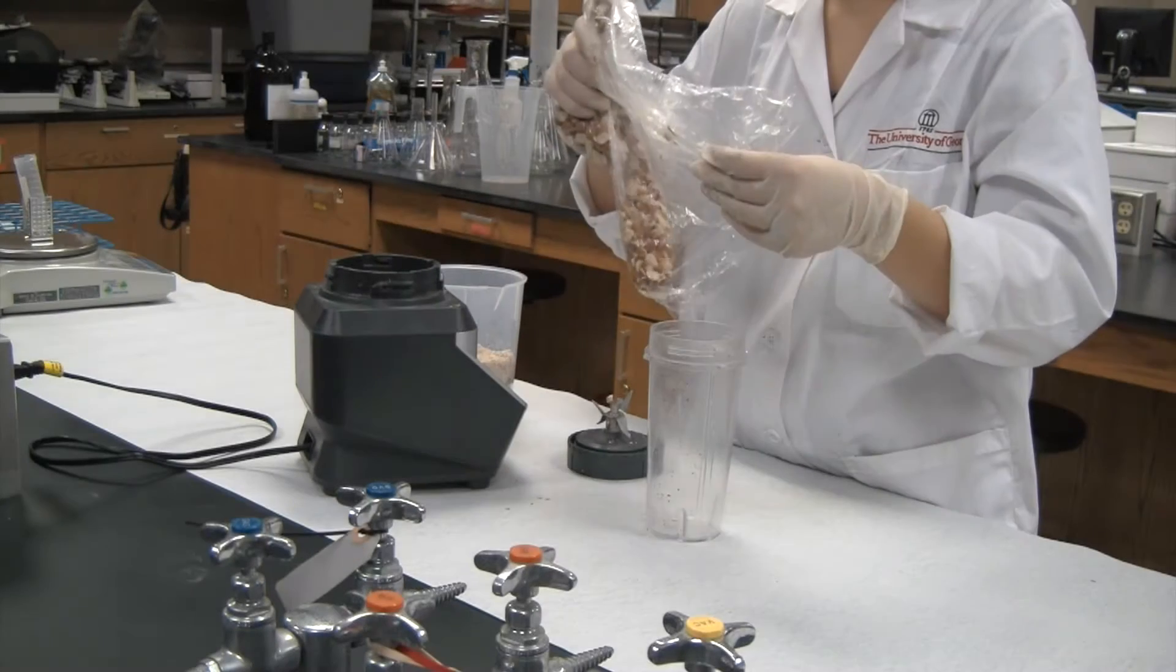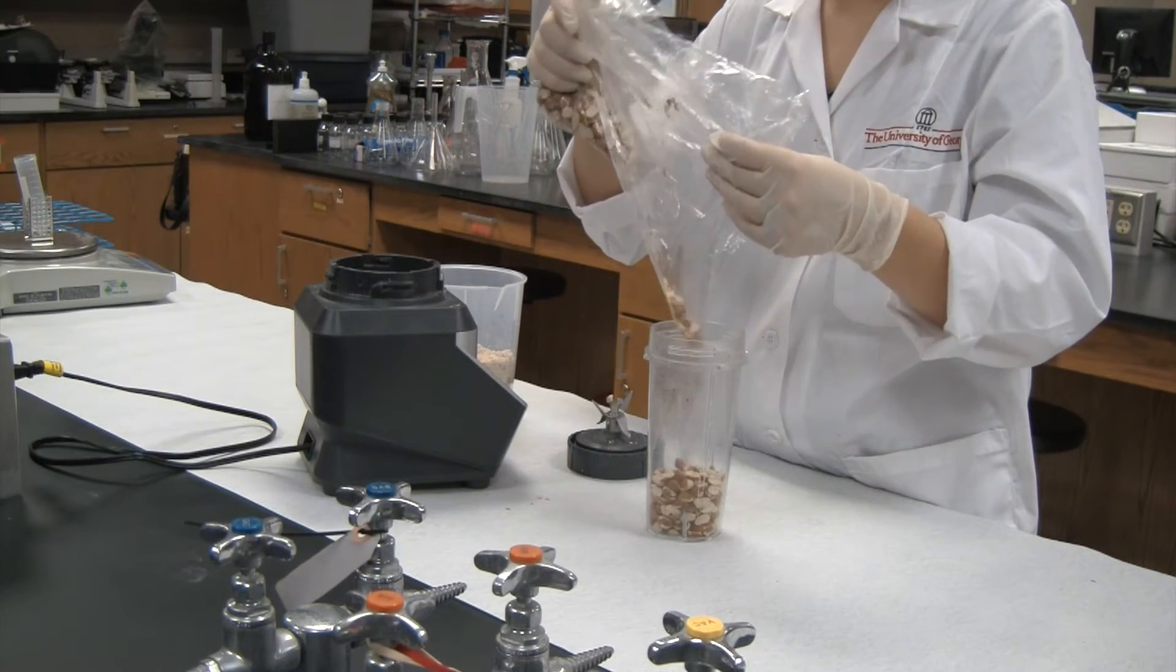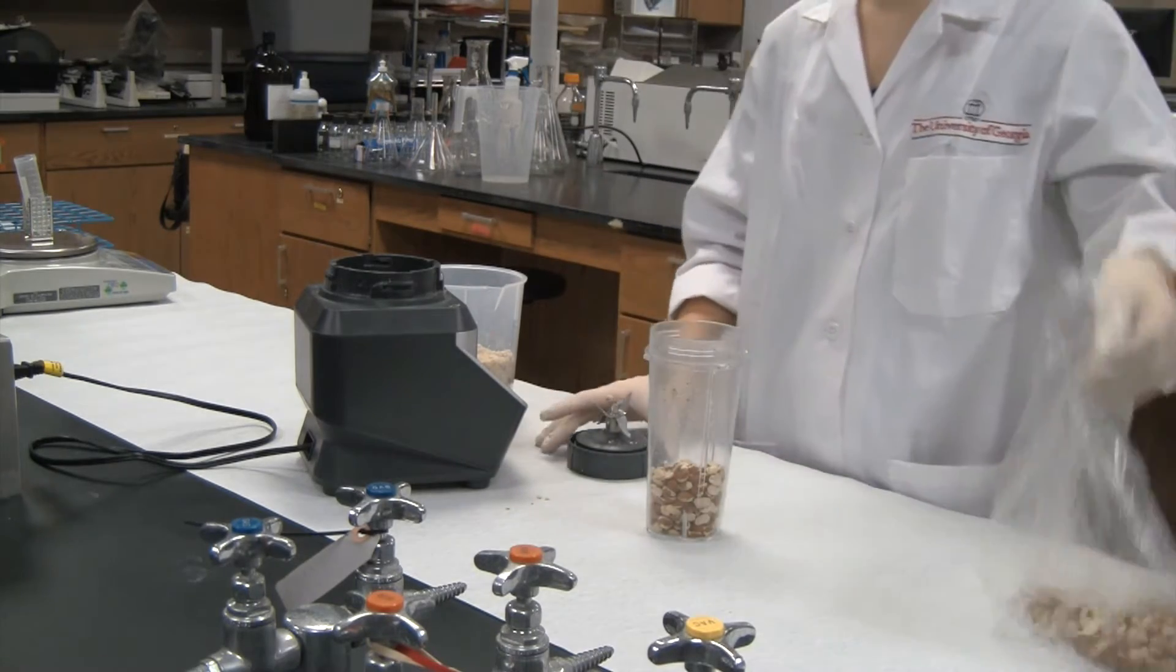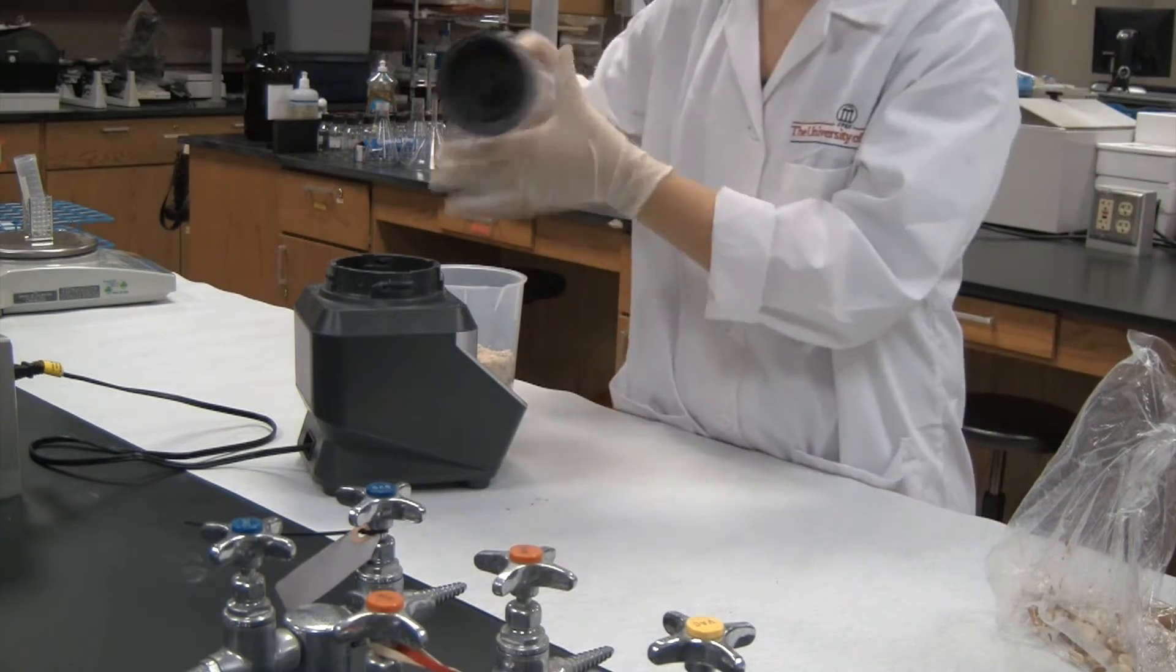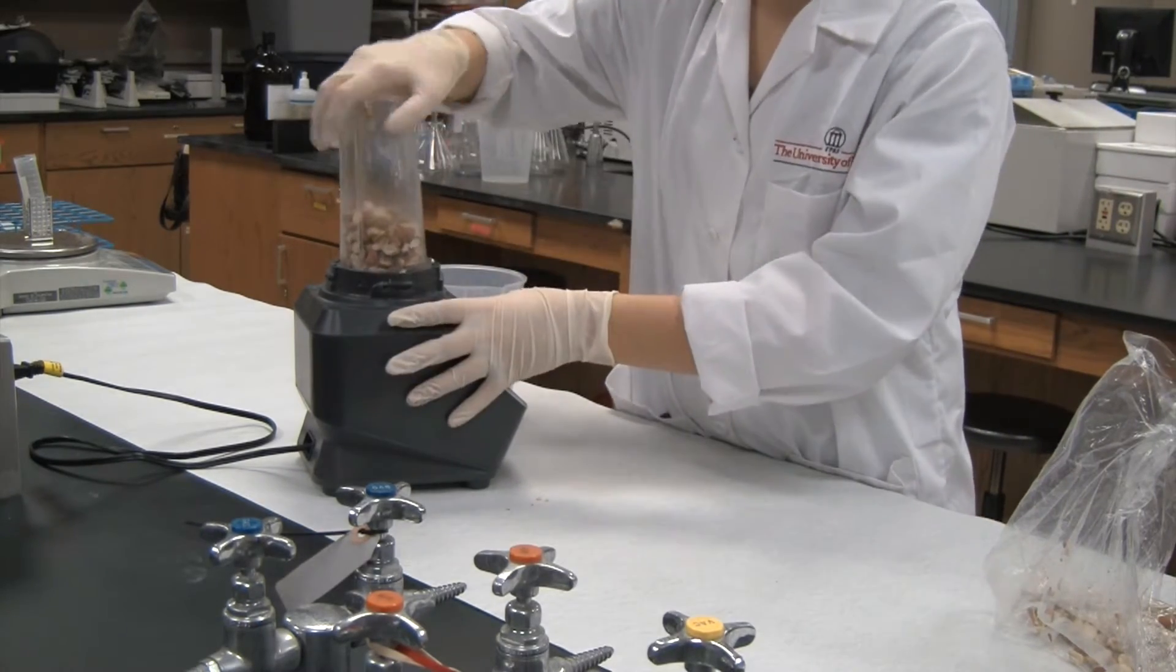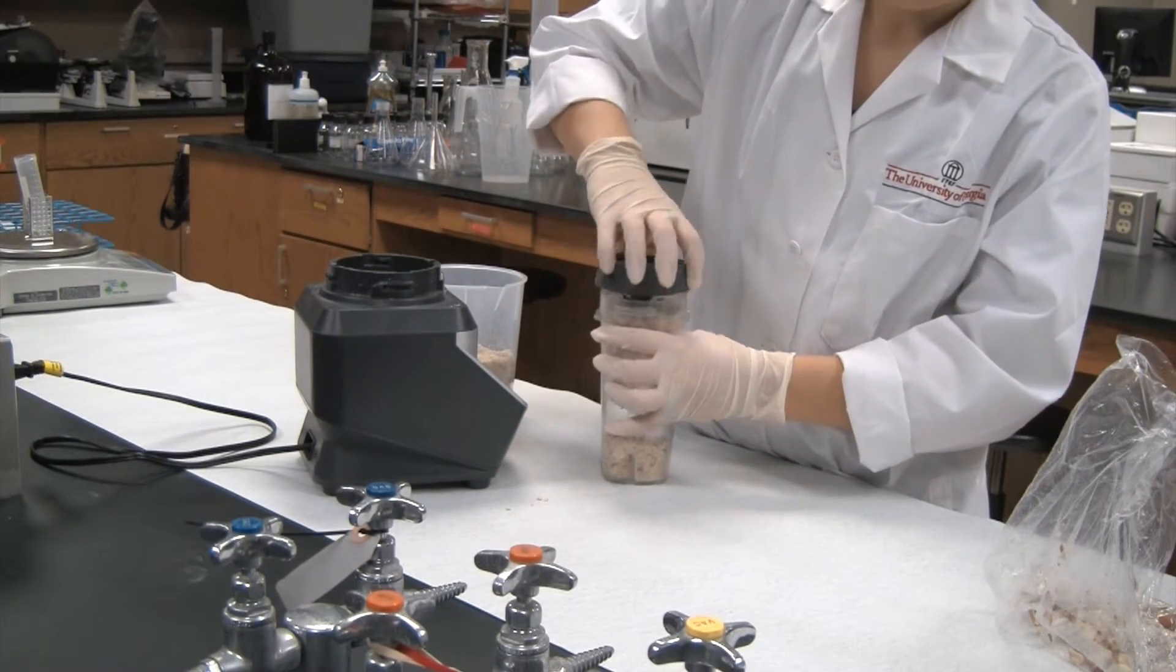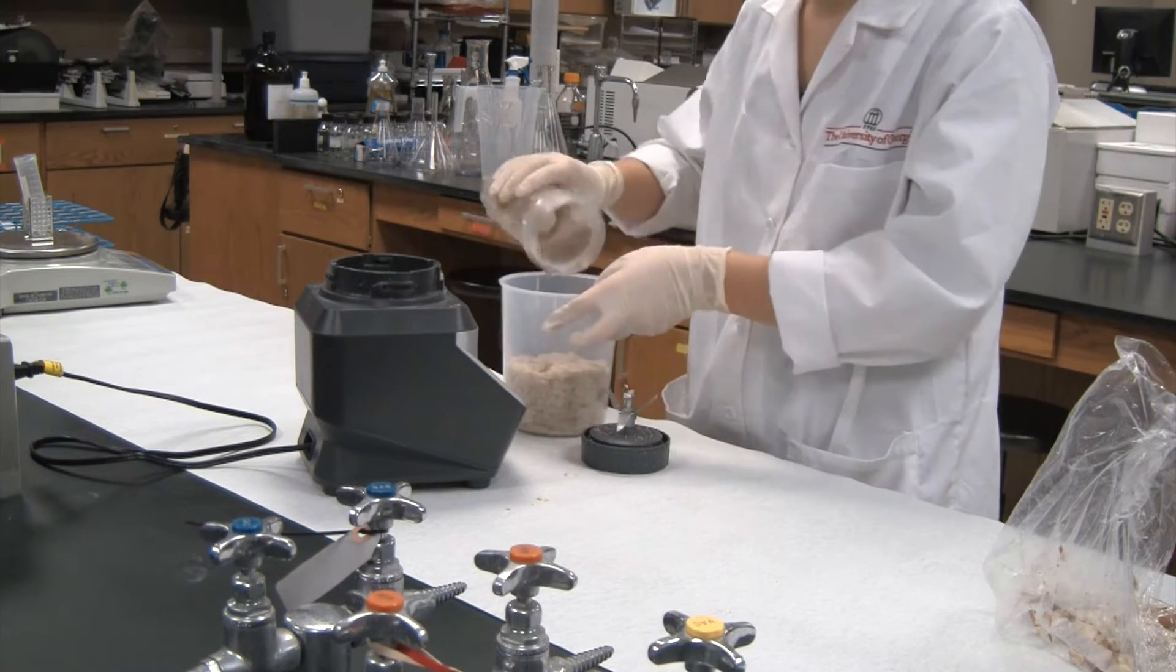Now, let's get started. First, the ground nut sample must be ground to a fine particle size. Be sure to grind the entire sample. Sampling technique and adequate sample size are very important to assure accurate results. A manual grinder can be used as long as the particle size is consistent and very fine. Here, we use an electric blender and several small batches to grind the entire sample.